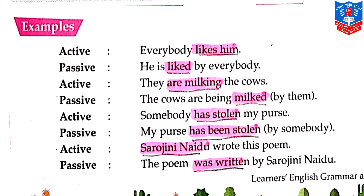Next: 'They are milking the cows' — we will make it passive: 'The cows are being milked by them' — 'by them' is written in brackets. Then, in active voice: 'Somebody has stolen my purse.' In passive, 'my purse', which was at the place of object in the active sentence, will now become the subject: 'My purse has been stolen by somebody.' We write 'somebody' because we don't know who has stolen it.